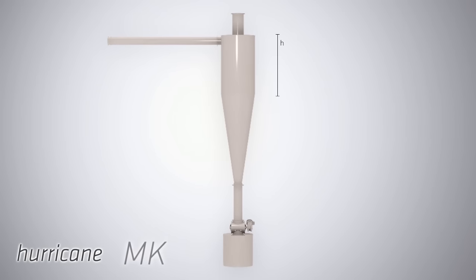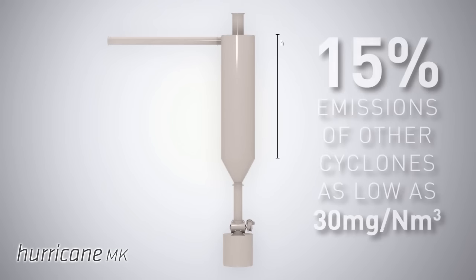Agglomeration is maximised with the new developed Hurricane Mk cyclones. Emissions can be under 15% of those of other cyclones, being as low as 30mg per normal cubic metre for many industrial processes.